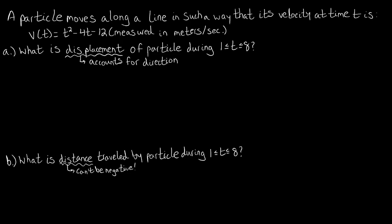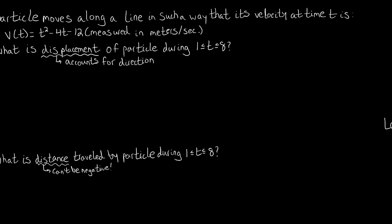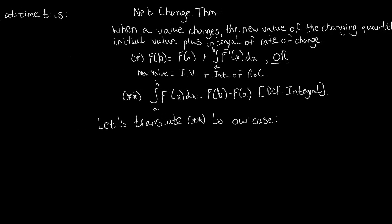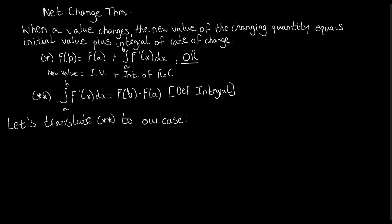So displacement requires both positive and negative values, while for distance we're only worried about positive values. We're going to get at how we handle distance using something similar to displacement — the net change theorem. Let's look at the net change theorem: when a value changes, the new value of the changing quantity equals the initial value plus the integral of the rate of change.